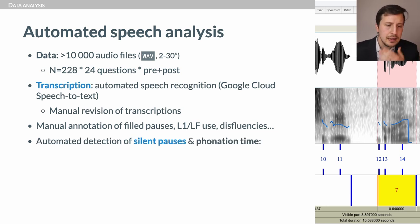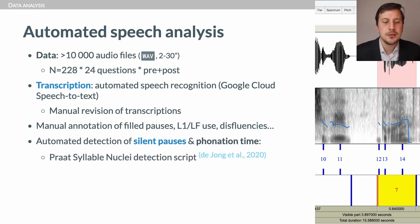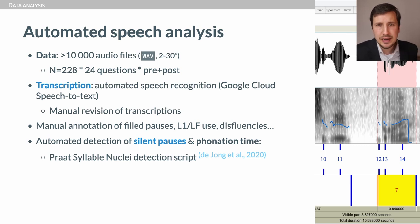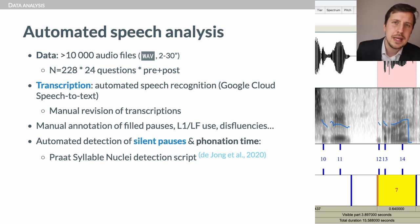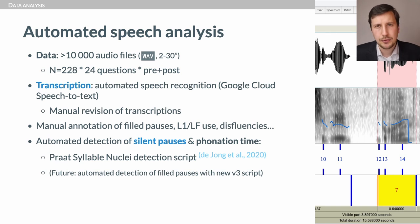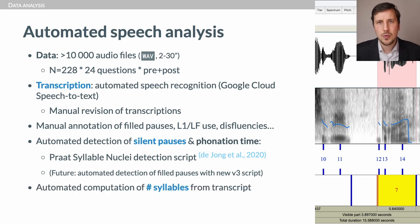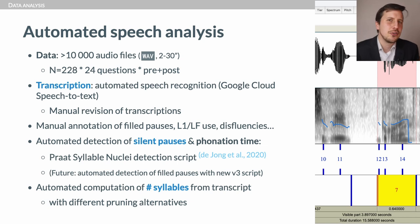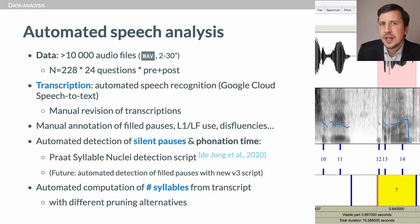Additionally, we used Nievelde Jong's Praat syllable nuclei detection script in its recently released third version. The script was used to compute silent pauses and phonation time, and to give an alternate count of syllables. For the main syllable count, we computed automatically from the manually reviewed transcript with different pruning alternatives. Counting syllables is a task computers do very reliably — probably even more than humans — so we had over 99% agreement for those counts.